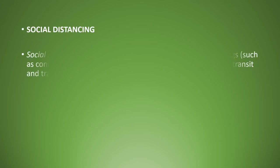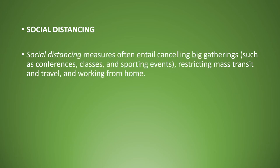तीसरा है Social Distancing. Social Distancing measures often entail cancelling big gatherings such as conferences, classes and sporting events, restricting marked transit and travel and working from home. Social Distancing में इस बात का ध्यान रखा जाता है कि भीड़ या समूह से अलग रहो — जैसे conference, classes, खेल कूद — इन सब को रद्द किया जाता है. यात्रा पर रोक लगाई जाती है और office के काम को घर से करने की हिदायत दी जाती है.